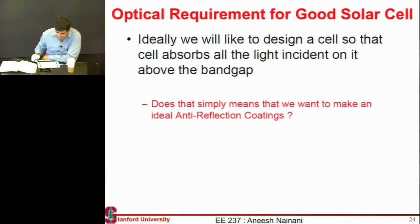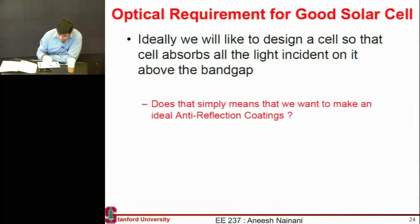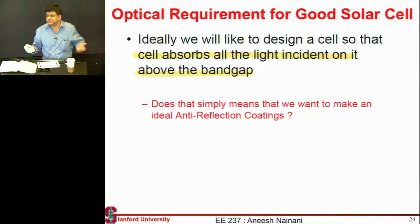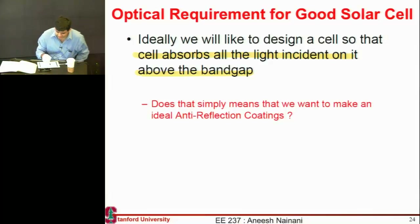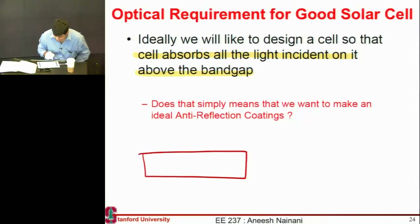Let me start by looking at the optical requirement for a good solar cell. My mission statement is: I want to design a cell such that it absorbs all the light which is above the band gap. But some people confuse this with having an anti-reflection coating — light trapping and anti-reflection coating are two very different things.